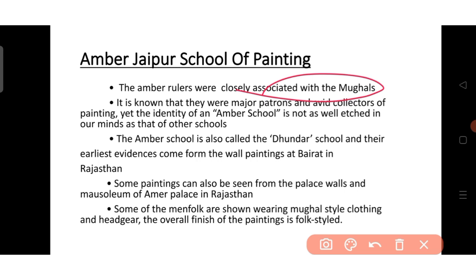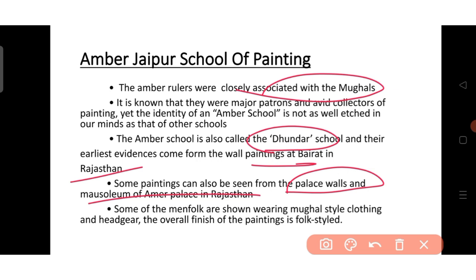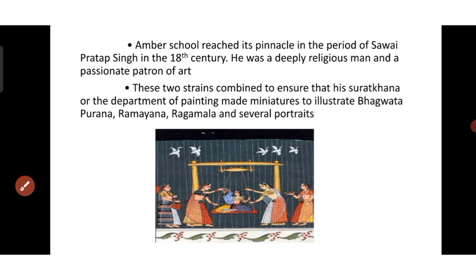The rulers of Amber were closely associated with the Mughals. They were major patrons and avid collectors of painting. The Amber school is also called the Dundar school and their earliest evidence comes from the wall paintings at Bairat in Rajasthan. Some Amber school paintings can also be found in palace walls and mausoleum of Amer Palace in Rajasthan. Men folk are shown wearing Mughal style clothing and headgear and the overall finish of the painting is folk styled.